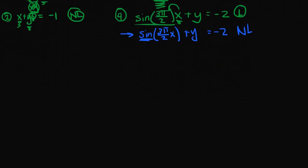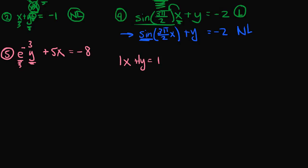Let's scroll down and change colors. Example 5: e to the negative 3 times y plus 5x is equal to negative 8. This equation is linear. e to the negative 3 is just some number, and it's multiplied by y. It's okay for variables to have a coefficient — in fact, all variables have a coefficient. For example, in x plus y equals 1, the coefficients for both x and y are 1.